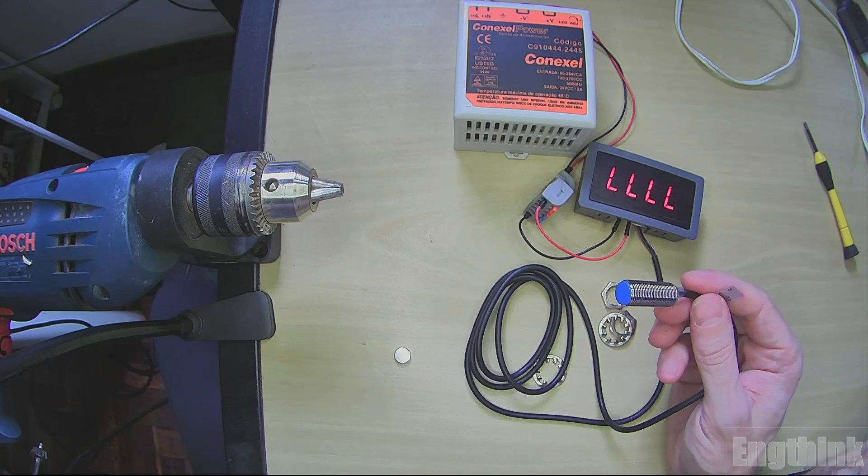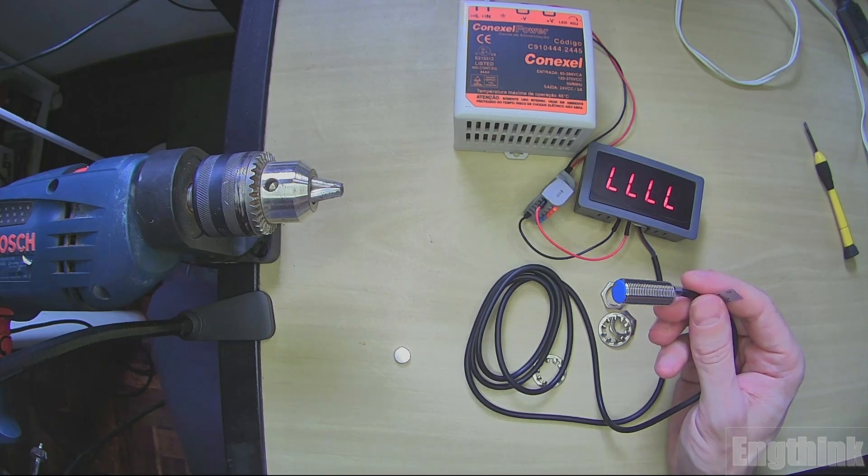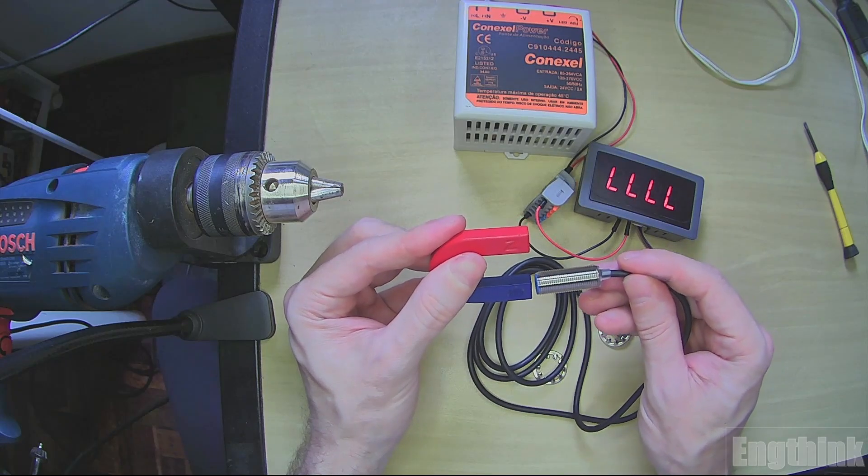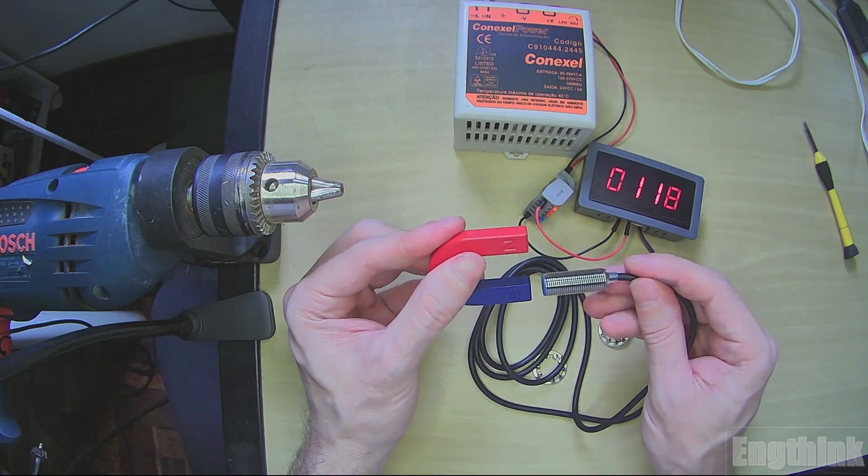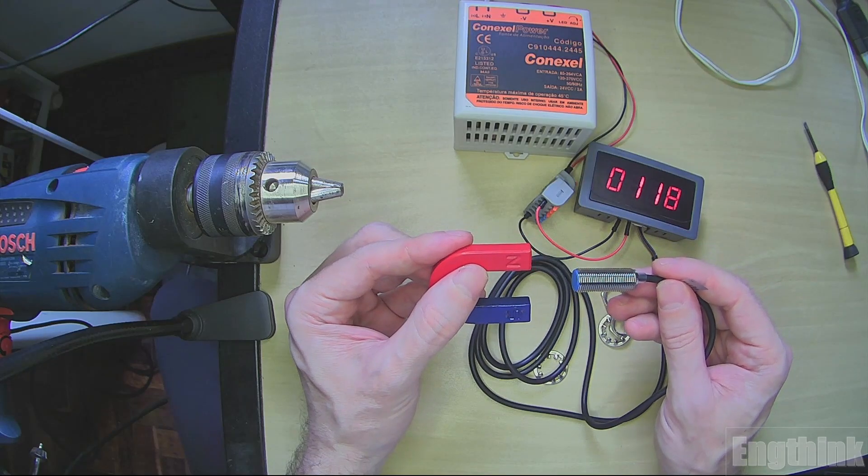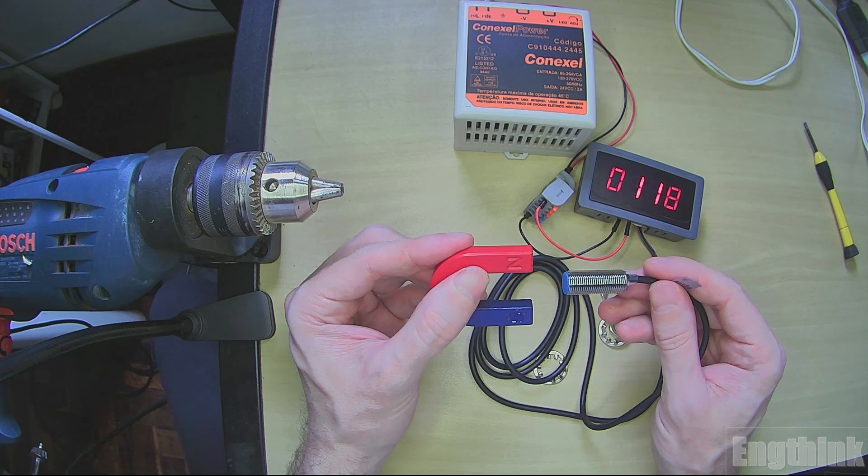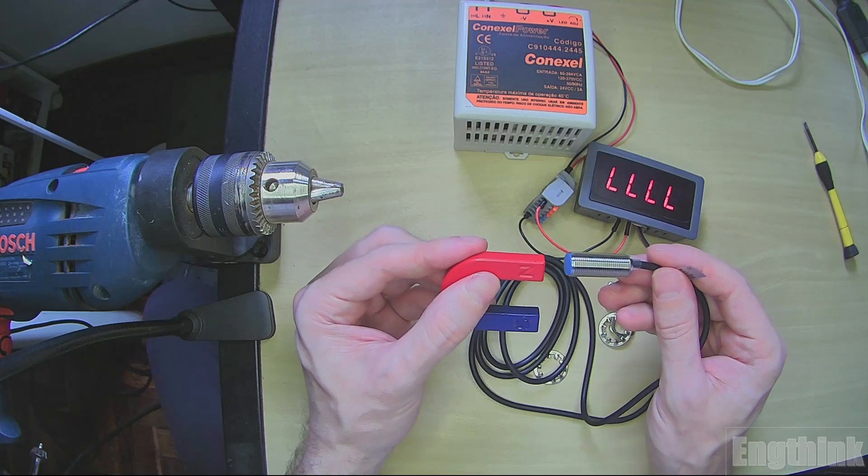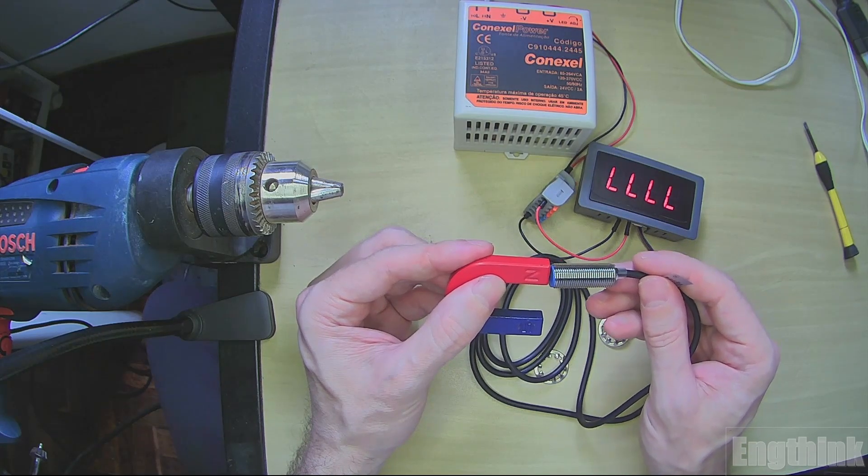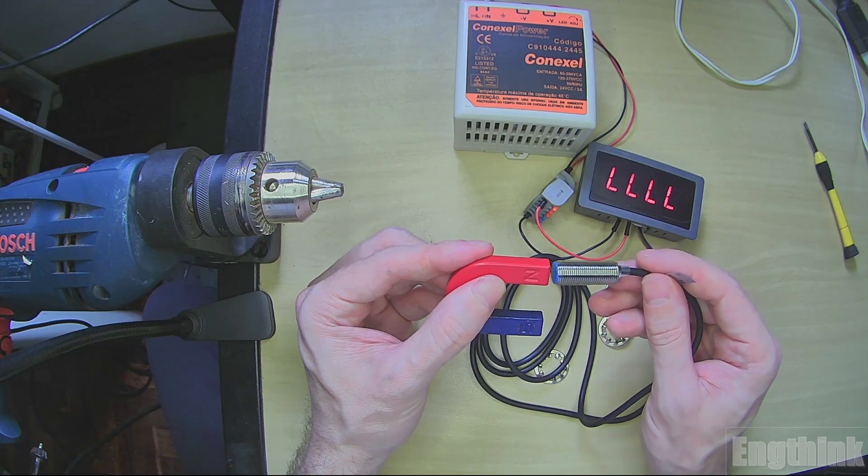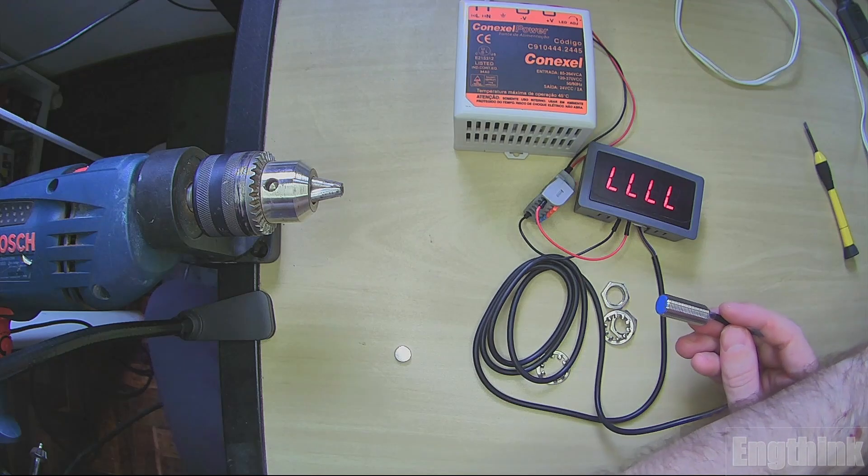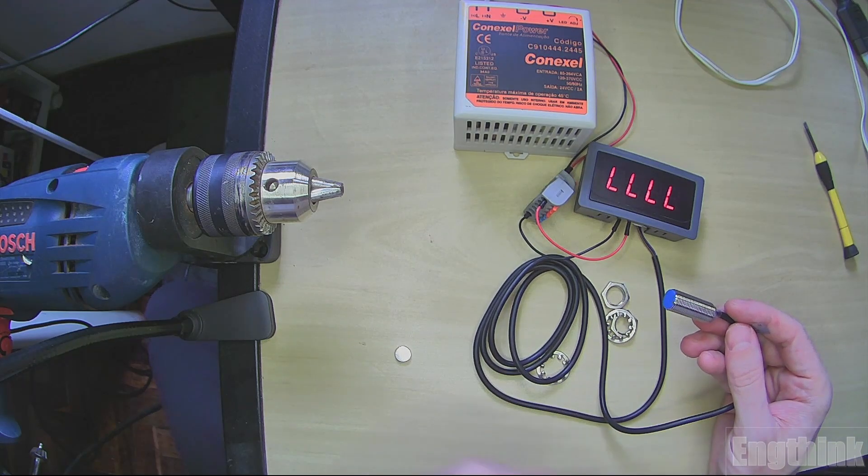Let's check again directly with the magnet with the south pole to confirm. With the south pole we have the indication, but with the north pole we don't have any detection. This is important because if you use the wrong polarity of the magnet we don't have the proper work of the tachometer.